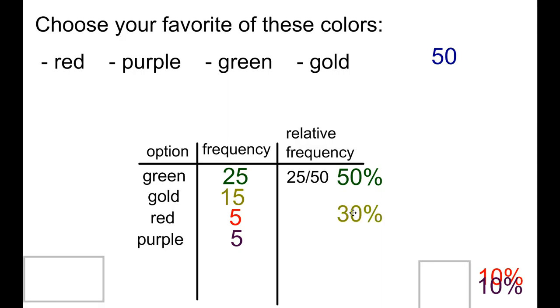Same idea with gold. 15 out of 50, if you do the math, it's going to be 30 percent. And then 10 percent for red and 10 percent for purple, because 5 divided by 50 is going to be 0.1 or 10 percent.